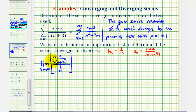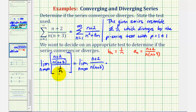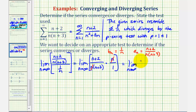We have a complex fraction, or division of two fractions, where we have the top fraction divided by the bottom fraction, which we'll rewrite as a multiplication problem. This equals the limit as n approaches infinity of the top fraction, and instead of dividing by the bottom fraction, we multiply by the reciprocal, which would be n over one. Notice in this form, n over n simplifies to one, leaving us with the limit as n approaches infinity of n plus two divided by n plus three.